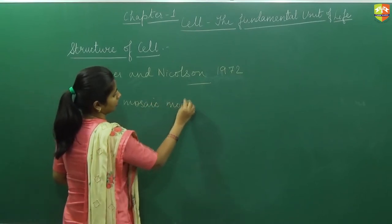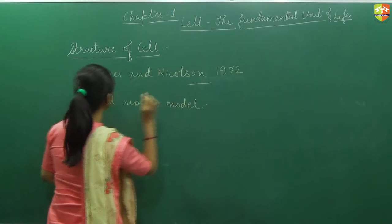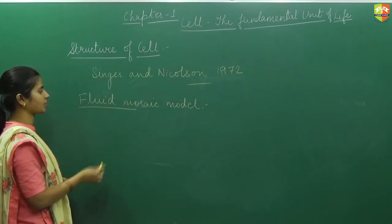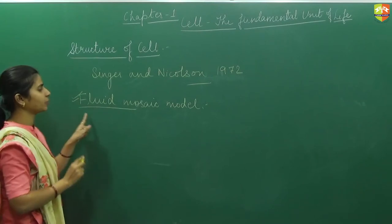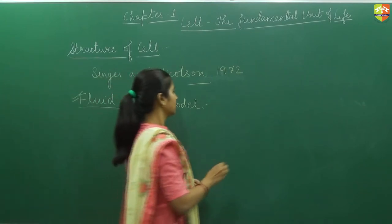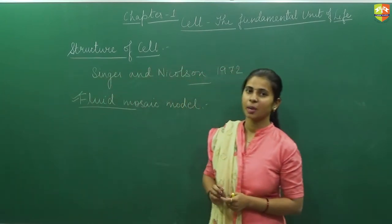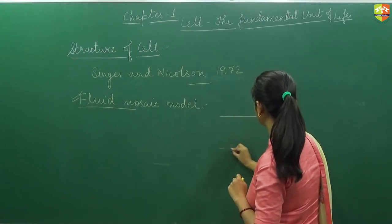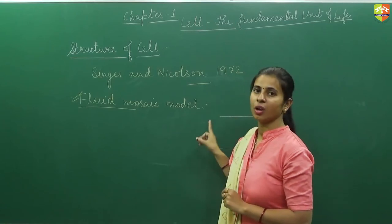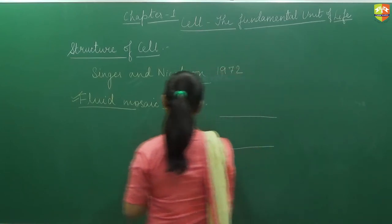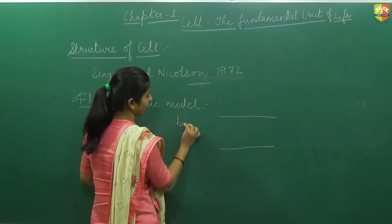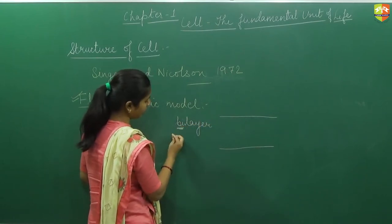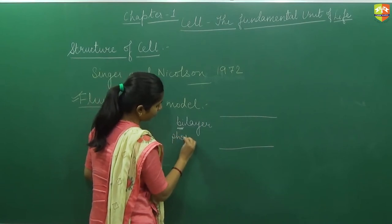In 1972, Singer and Nicolson proposed a model whose name was the Fluid Mosaic Model. Remember, this is an important model for detailed study of the structure of the cell membrane or plasma membrane. According to this Fluid Mosaic Model, the plasma membrane is made up of two layers — a bilayer — of phospholipid.